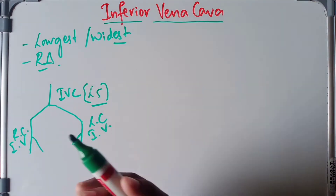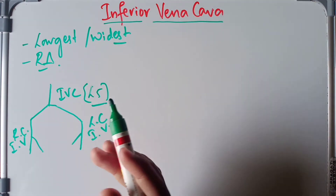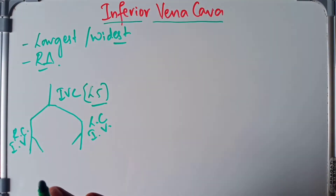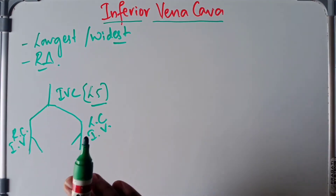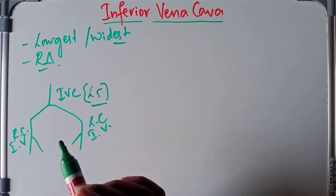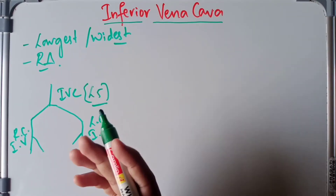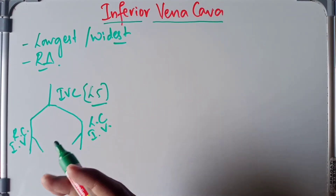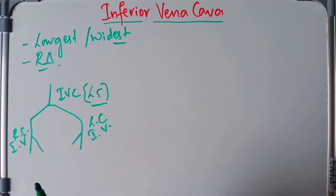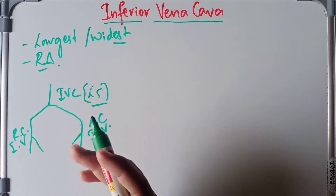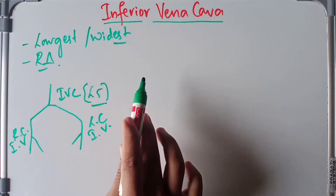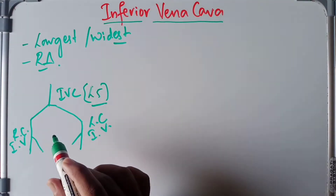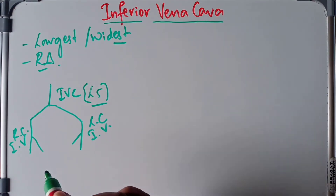On the posterior side of the inferior vena cava we have the right sympathetic chain, the right renal artery, the right celiac ganglion, the right suprarenal artery, the right inferior phrenic artery, and the right middle suprarenal vein. Those are the posterior relations of the inferior vena cava.